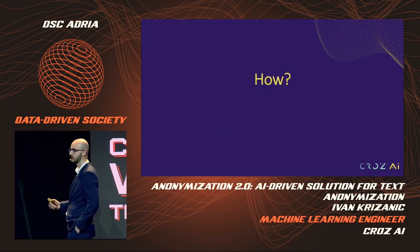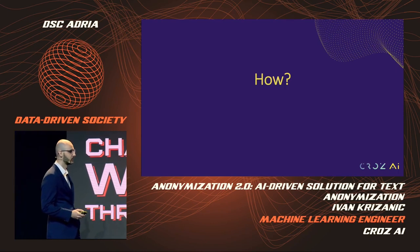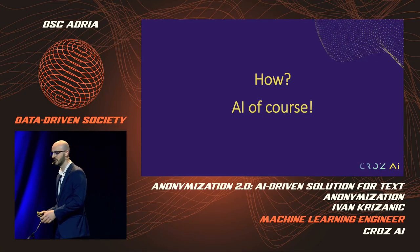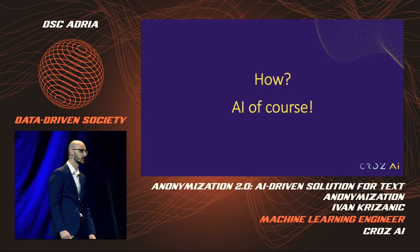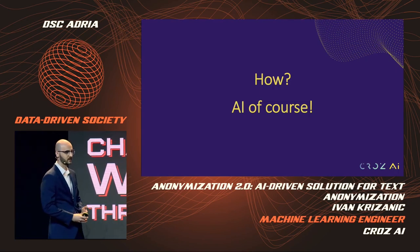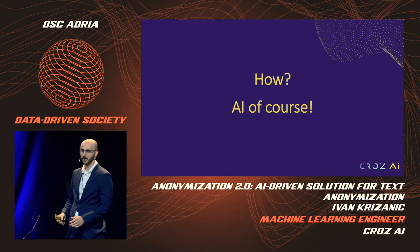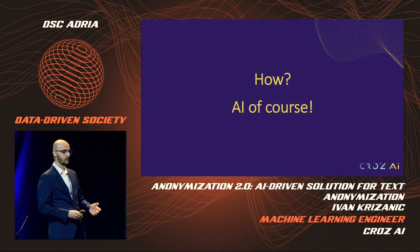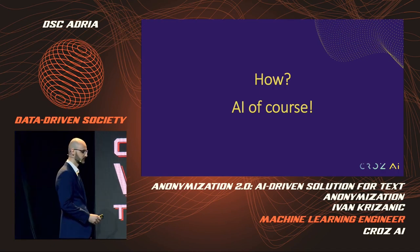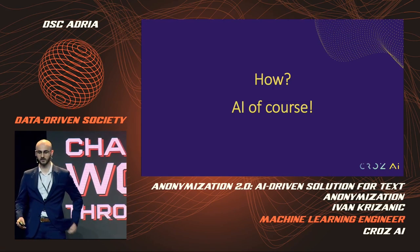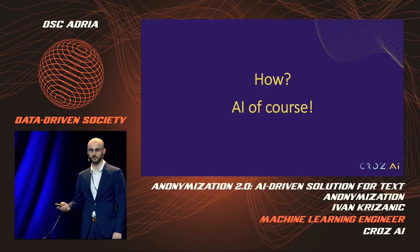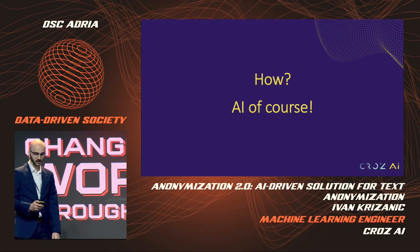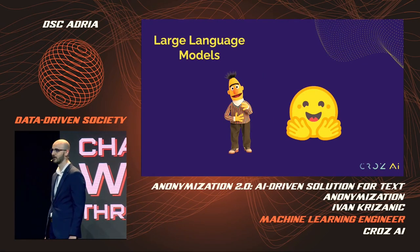Now we know what we're doing and why. Here comes the best question: how did we implement all of this? If this were a presentation called anonymization 1.0, I would talk about employing human workers to manually label texts, or finding domain experts to write precise rules to detect private information. But those methods, although still used by many companies, are not as reliable or scalable as we'd like. This is anonymization 2.0, so we are going to use AI — specifically, the best thing in AI right now: large language models.